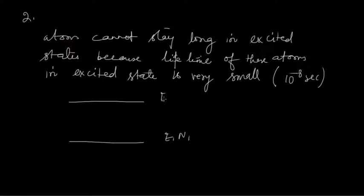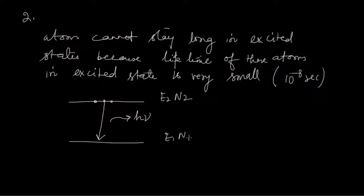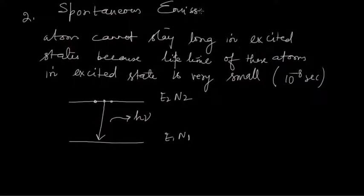So with energy levels E1, N1 and E2, N2 — the atoms are in the excited state and because they cannot stay there long, they jump down, giving out photons of energy equal to the difference of the two levels. Because this process happens by itself — we don't need anything to trigger it — and it is emitting photons, the name of this process is spontaneous emission.